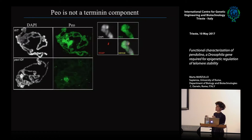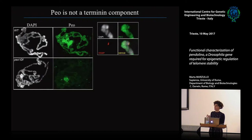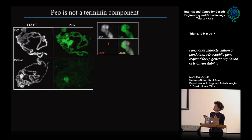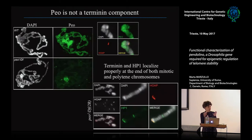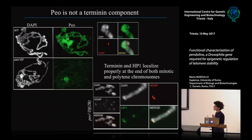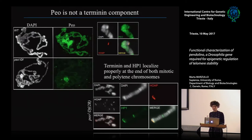However, Pendolino is not a terminin component because it does not localize exclusively at telomeres as terminin does — here represented by HOAP — but also along the chromosome arms. These are polytene chromosomes, the particular Drosophila chromosomes found inside the salivary glands, formed by cycles of endoreplication without separation, which are used to analyze the localization of chromosome-associated proteins. Here you can see the localization pattern of Pendolino binding all chromosomes, and this localization disappears in the mutant. We also asked if Pendolino is required for proper localization of terminin proteins, but both terminin (represented by HOAP) and HP1 normally localize at telomeres in peo mutants, suggesting that the fusions are not related to the absence of these factors.